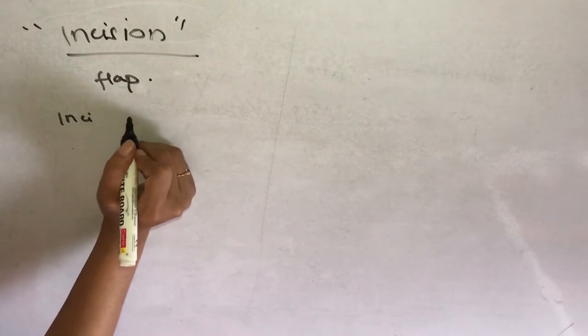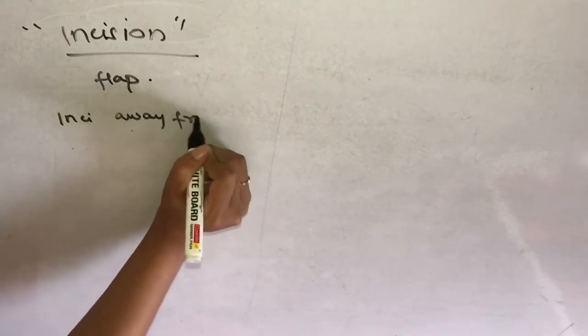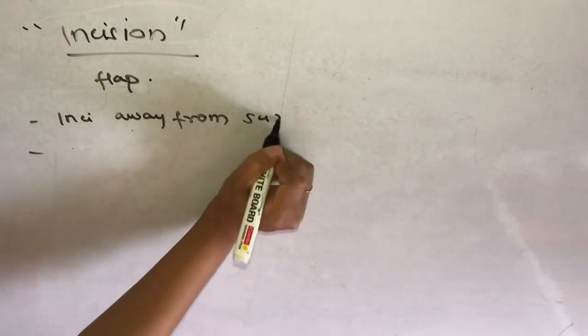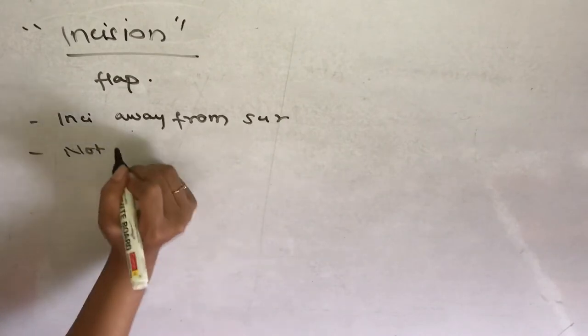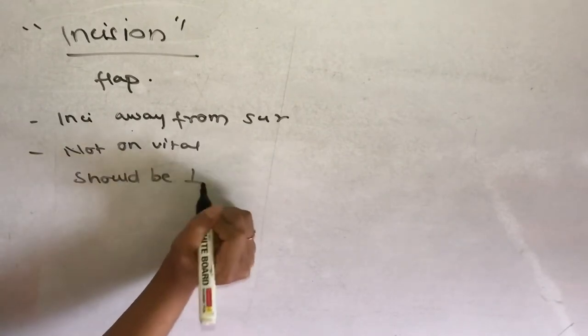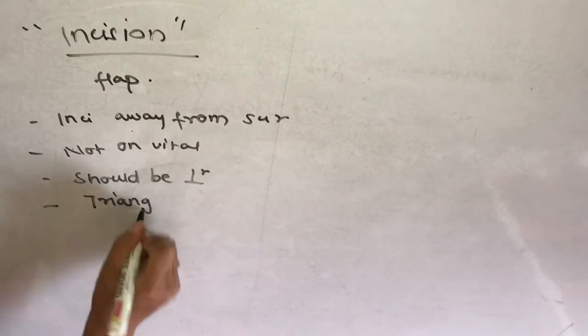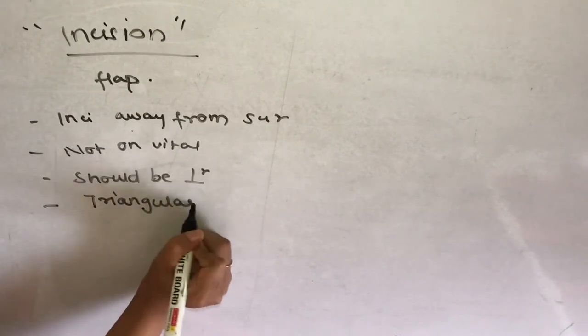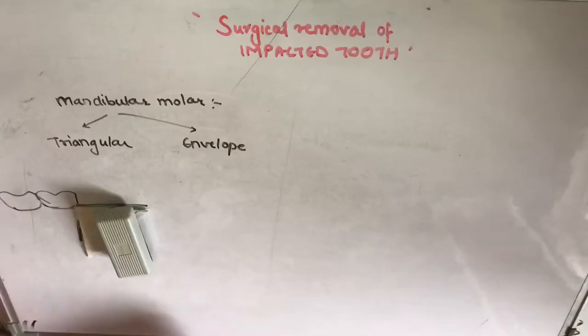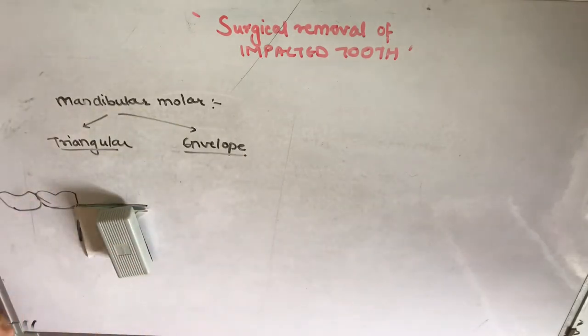The principles of incision are: the incision should be away from the surgical site, it should not be on vital structures, it should be perpendicular to the tissue, and a triangular flap is usually recommended for adequate blood supply.